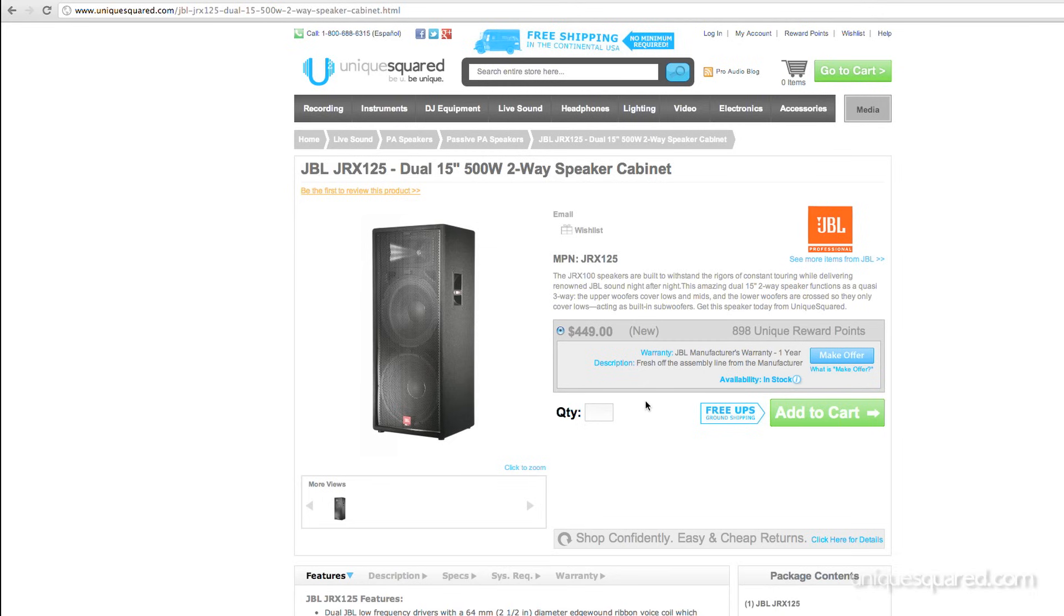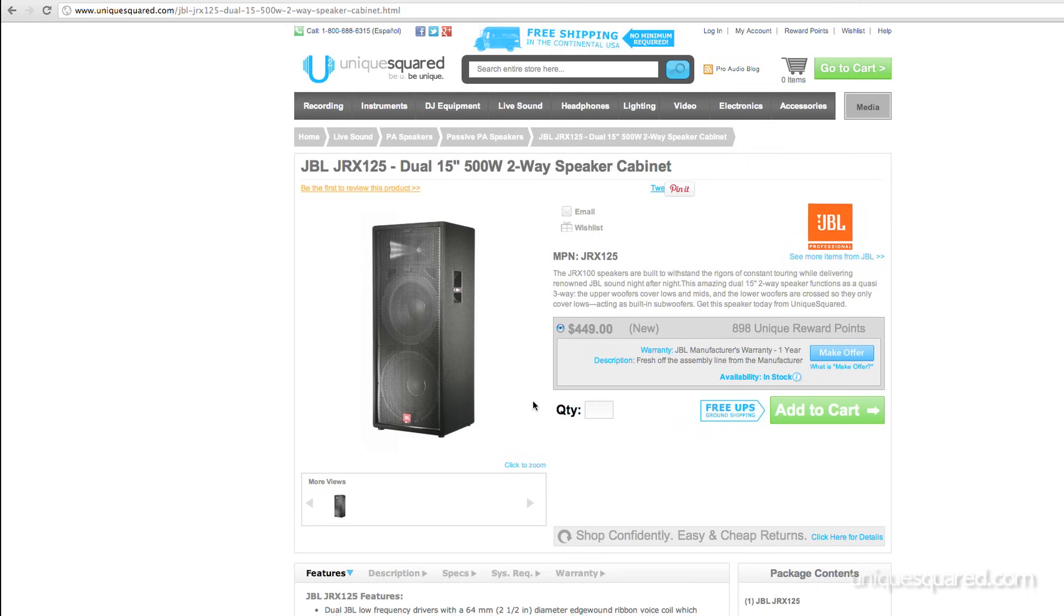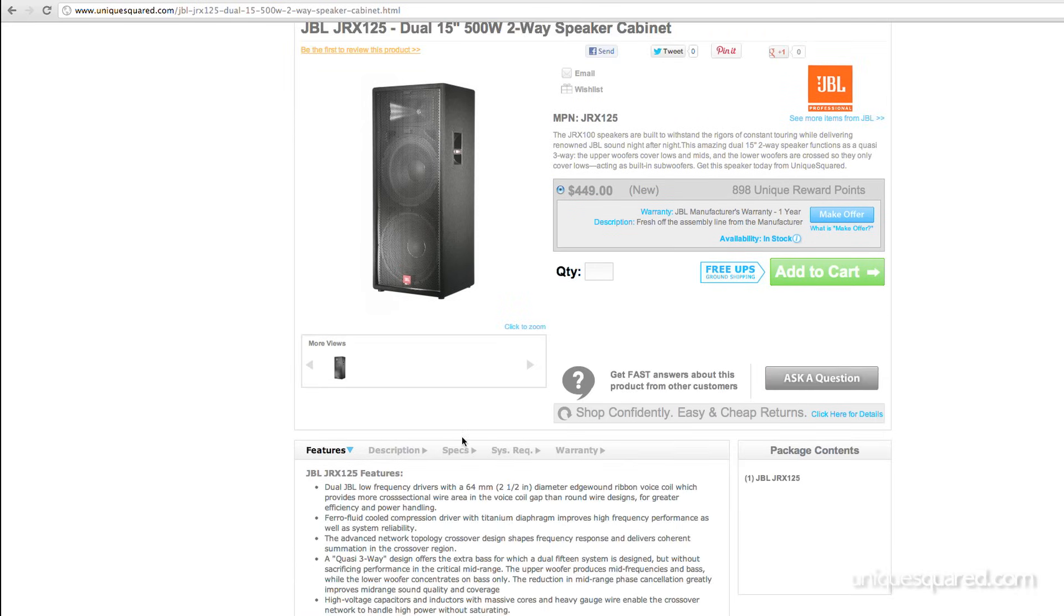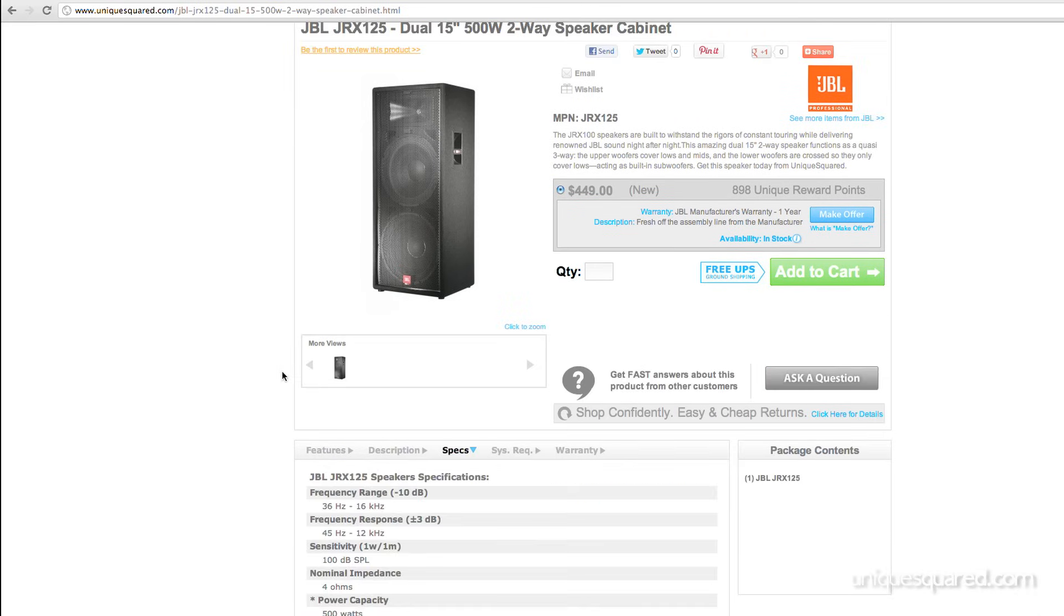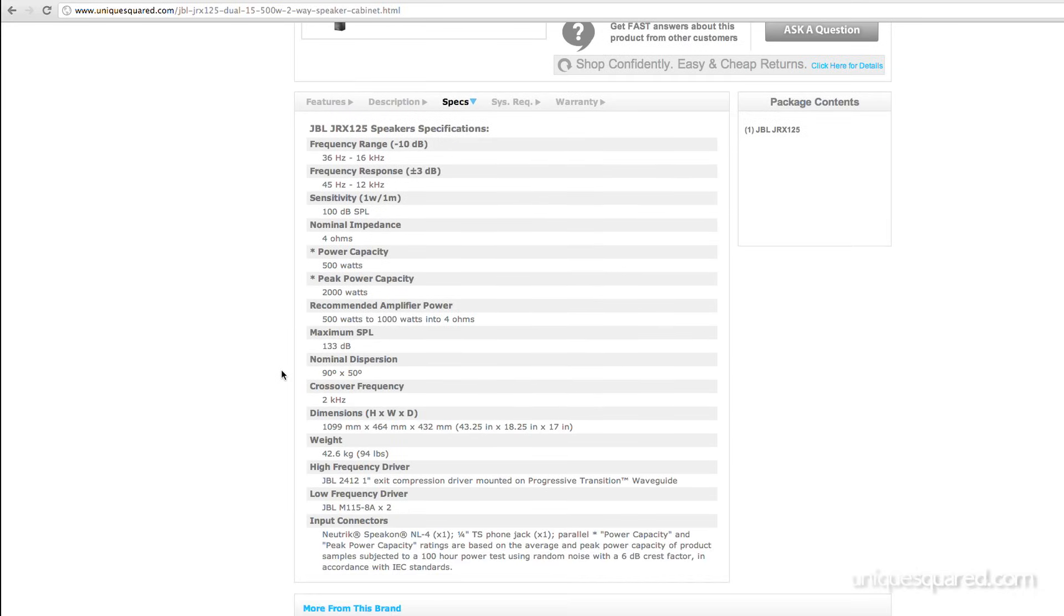I recently got a pair of JBL JRX 125s from UniqueSquared.com. They each have a horn and two 15-inch speakers, and I think they sound really good. But they are unpowered or passive, so I had to find an amp before I could get any sound out of them. The first thing I did was find the specs of the speakers. When the specs pulled up, I was only interested in a couple of numbers: the nominal impedance and the power capacity. With that information, I was ready to choose an amp.